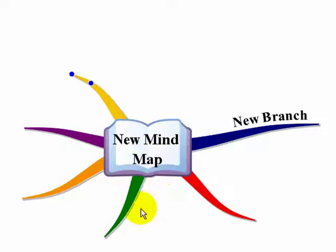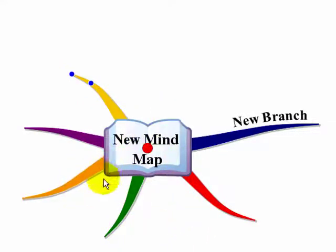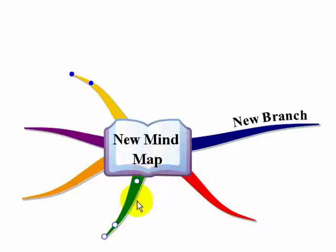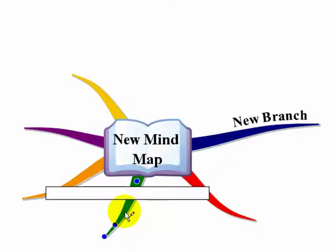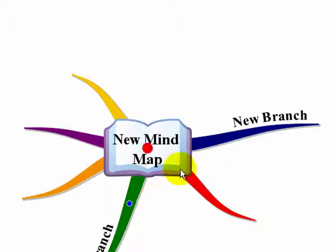As you can see it automatically produces branches in a different colour. Normally what you would do is create the branch and add the text together. So if I had an empty branch here that I wanted to add text to, simply click on it and write the information you want — so you'd write 'second branch', for example.